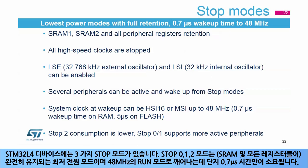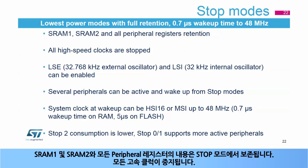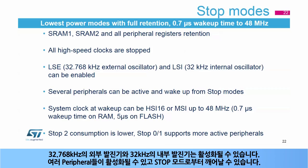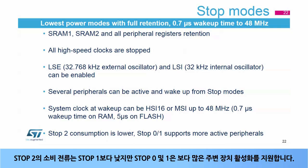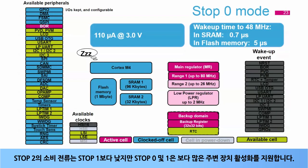STM32L4 devices feature three stop modes — stop 0, 1, and 2 — which are the lowest power modes with full retention and only a 0.7 microsecond wake-up time to run mode at 48 MHz. The contents of SRAM 1, SRAM 2, and all peripheral registers are preserved in stop modes. All high-speed clocks are stopped. The 32.768 kHz external oscillator and 32 kHz internal oscillator can be enabled. Several peripherals can be active and wake up from stop mode. The system clock on wake-up can be the internal high-speed or multi-speed oscillator up to 48 MHz, with a 0.7 microsecond wake-up from RAM or 5 microseconds from flash. Stop 2 consumption is lower than stop 1, but stop 0 and 1 support more active peripherals.